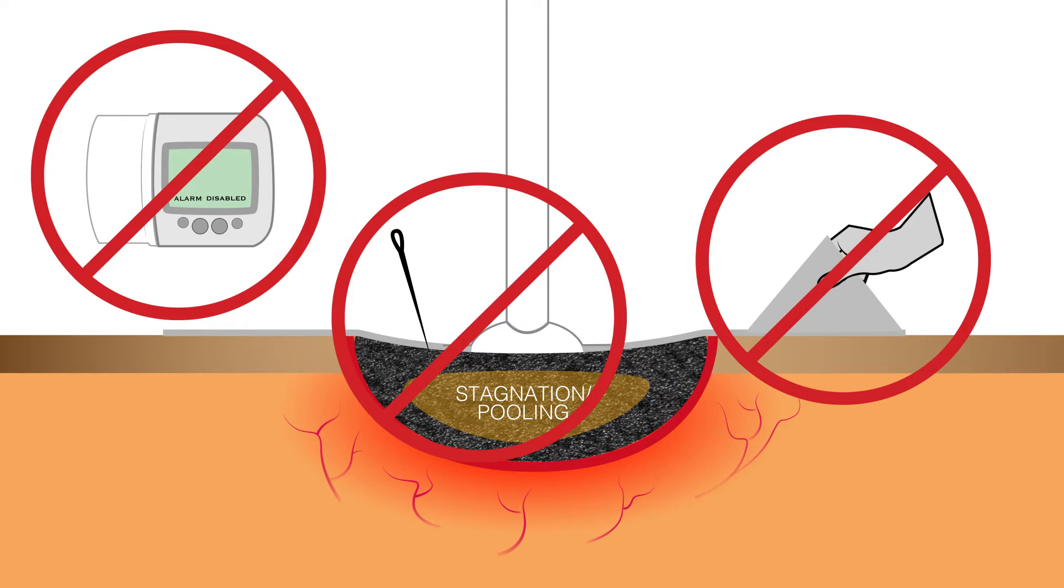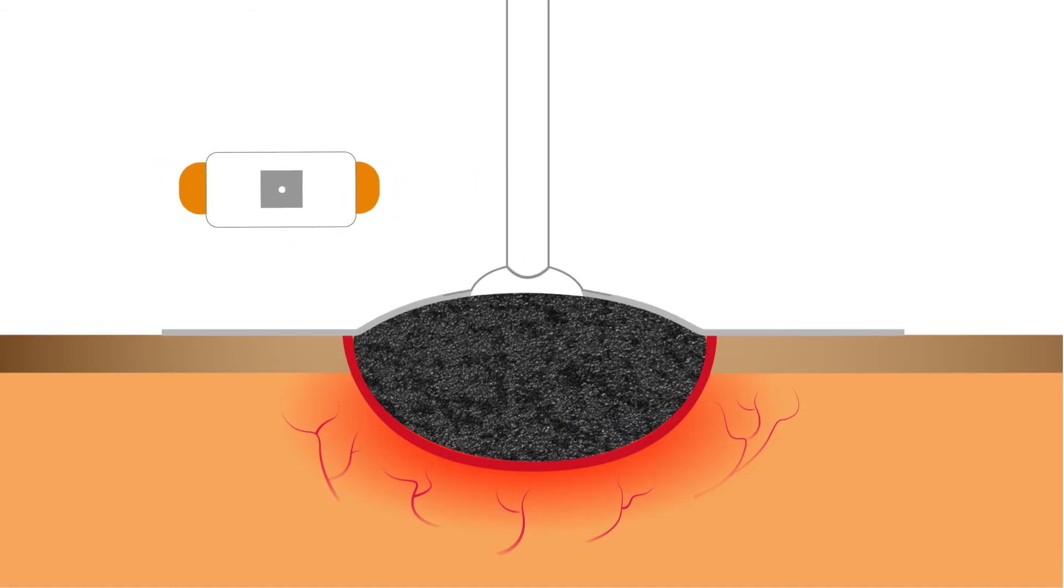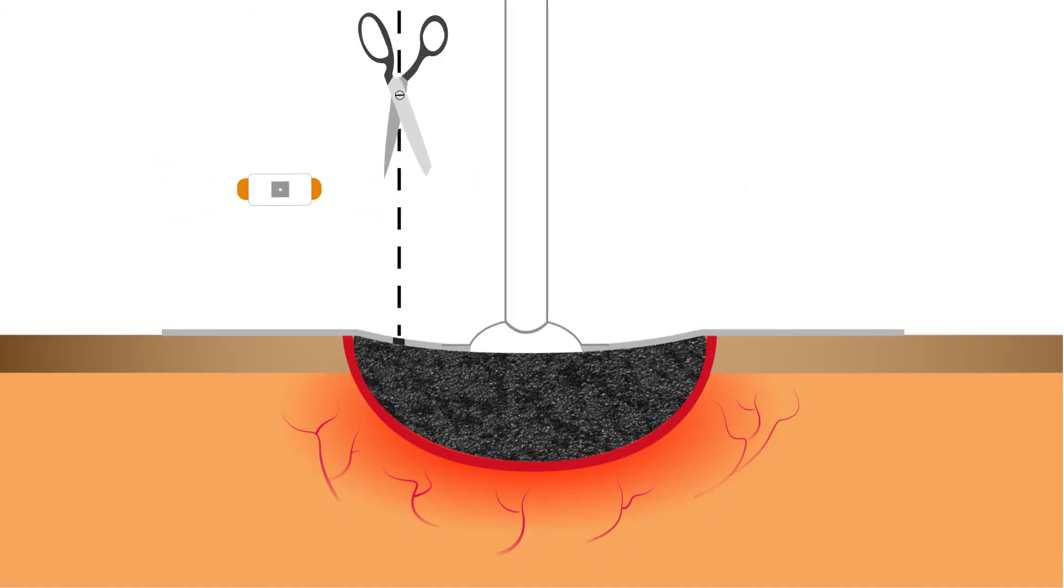The FloSure Ventilation Patch helps to solve this problem. To use the patch, simply make an eighth to quarter inch hole in the existing dressing and apply the FloSure patch over the hole.